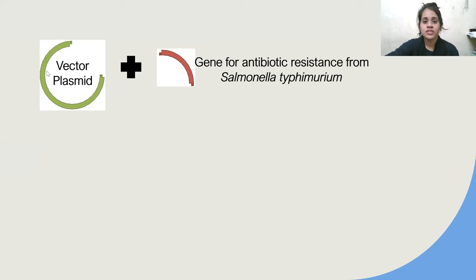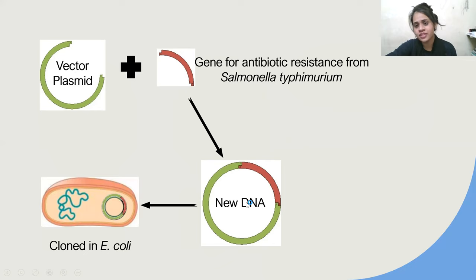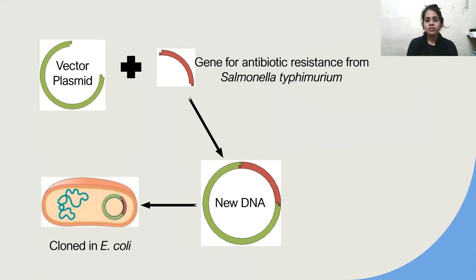Now let us see how recombinant DNA gets formed. This is a vector plasmid. When it combines with a gene — the gene of interest — for example, I have taken a gene for antibiotic resistance from Salmonella typhimurium. When I mix the two DNAs, it forms a new DNA called recombinant DNA. This recombinant DNA can then be introduced into an E. coli vector to produce multiple copies.